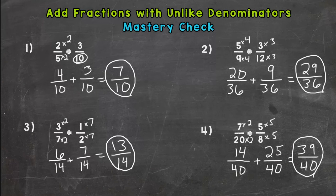So hopefully you either had three correct out of the four or four correct out of the four. That was your goal. If not, hopefully you're seeing where you are making your mistakes so you can correct those. So that's the adding fractions with unlike denominators mastery check. Thanks for watching.